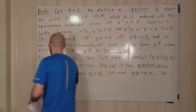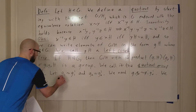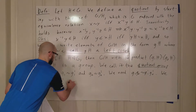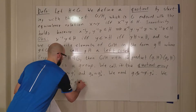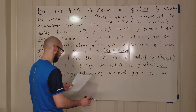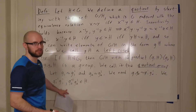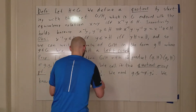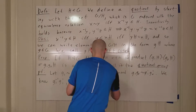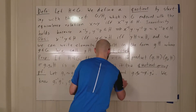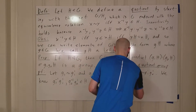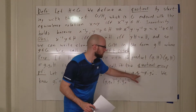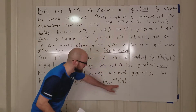By definition of our equivalence relation, we know that g1 inverse g1 prime and g2 inverse g2 prime are both contained in H, because that's what it means for them to be equivalent. So if we look at (g1g2) inverse times g1 prime g2 prime, to prove these two are equivalent we need this expression to be in H.